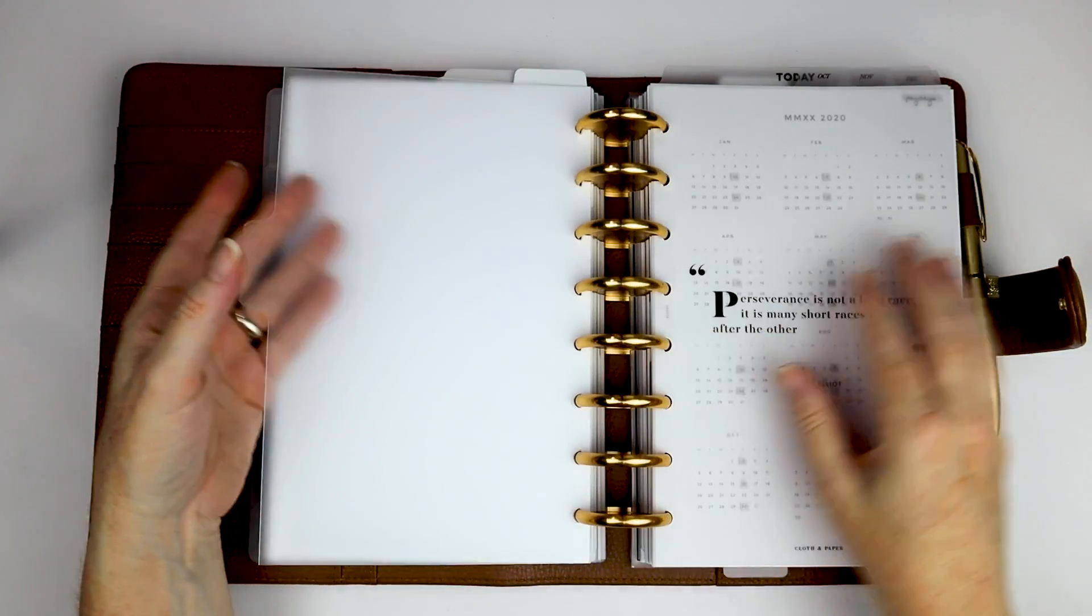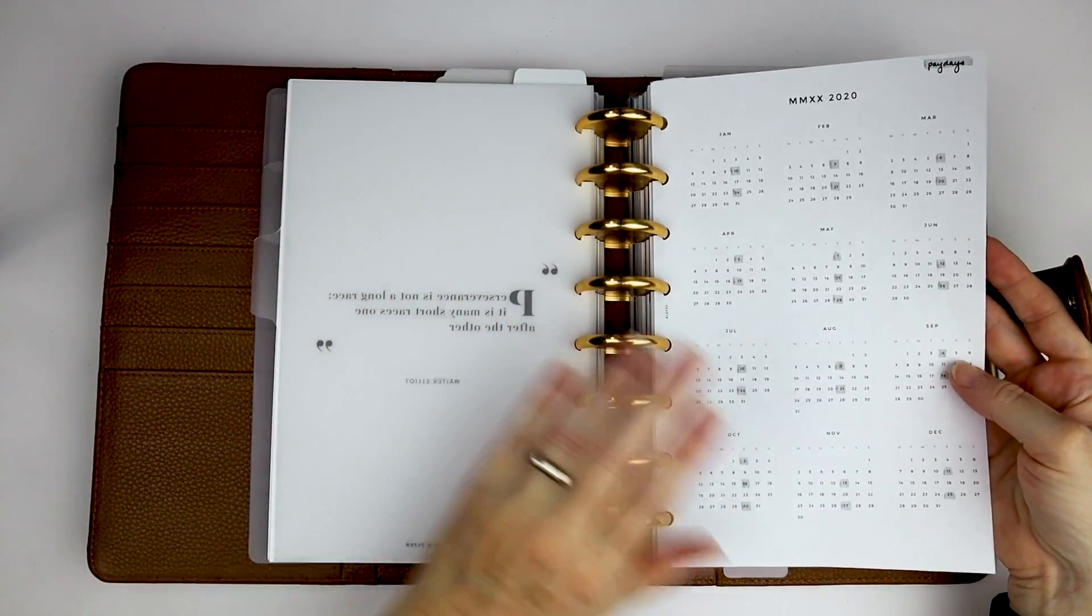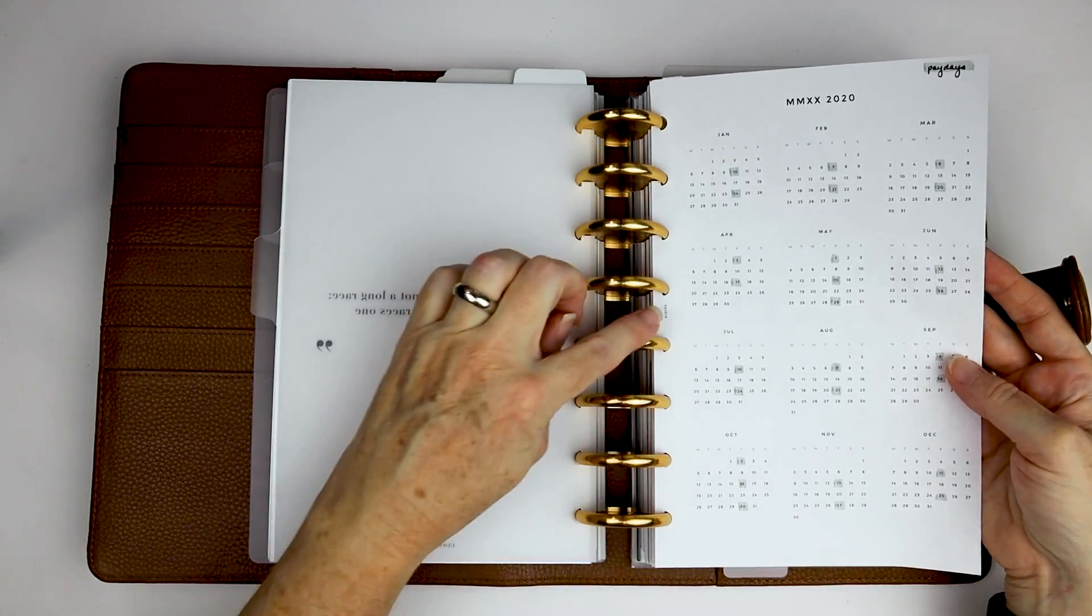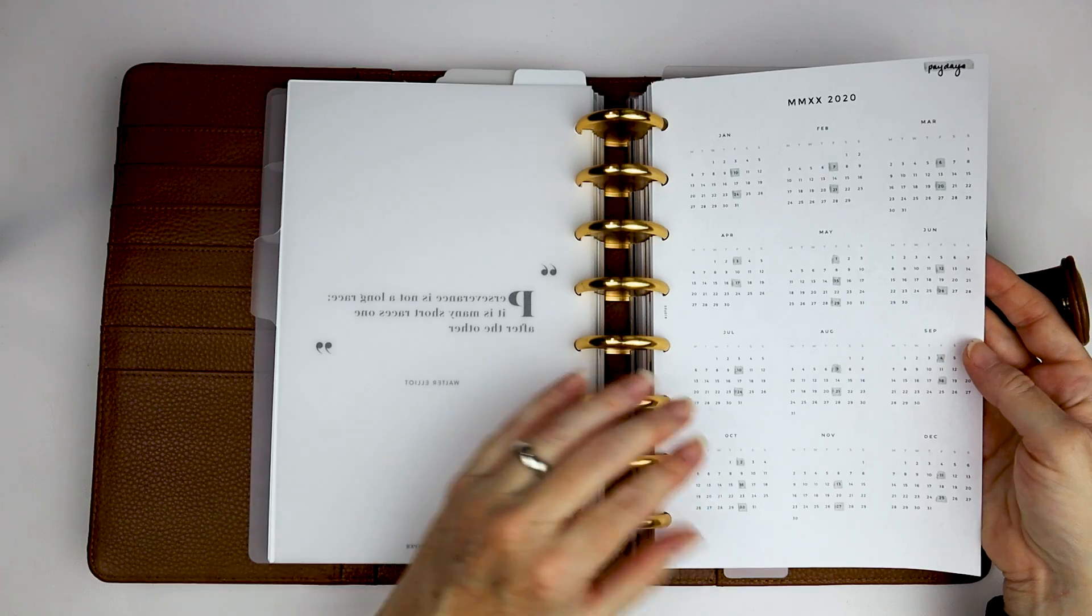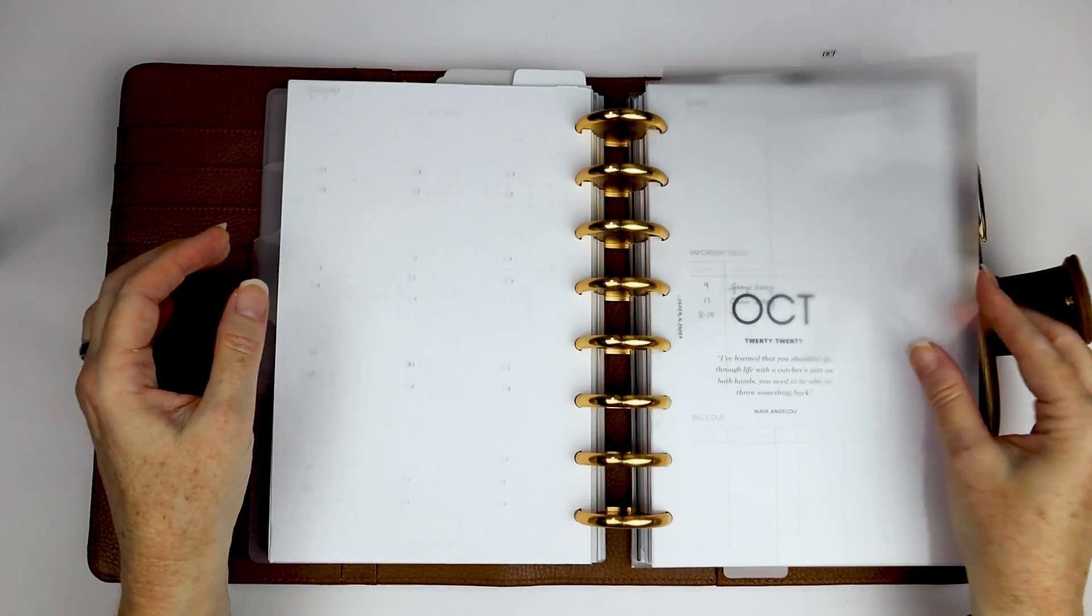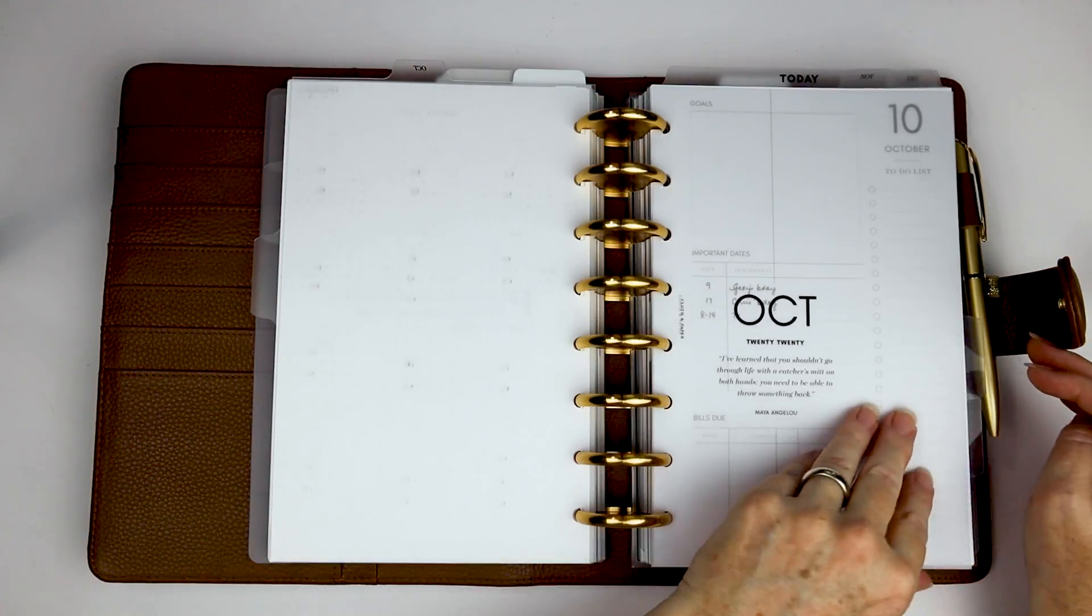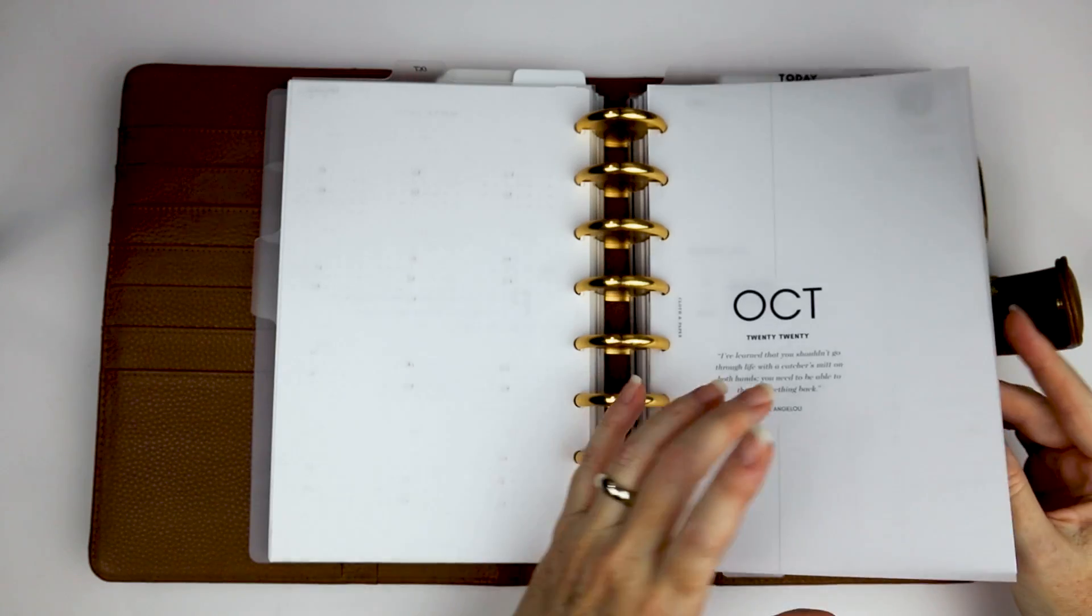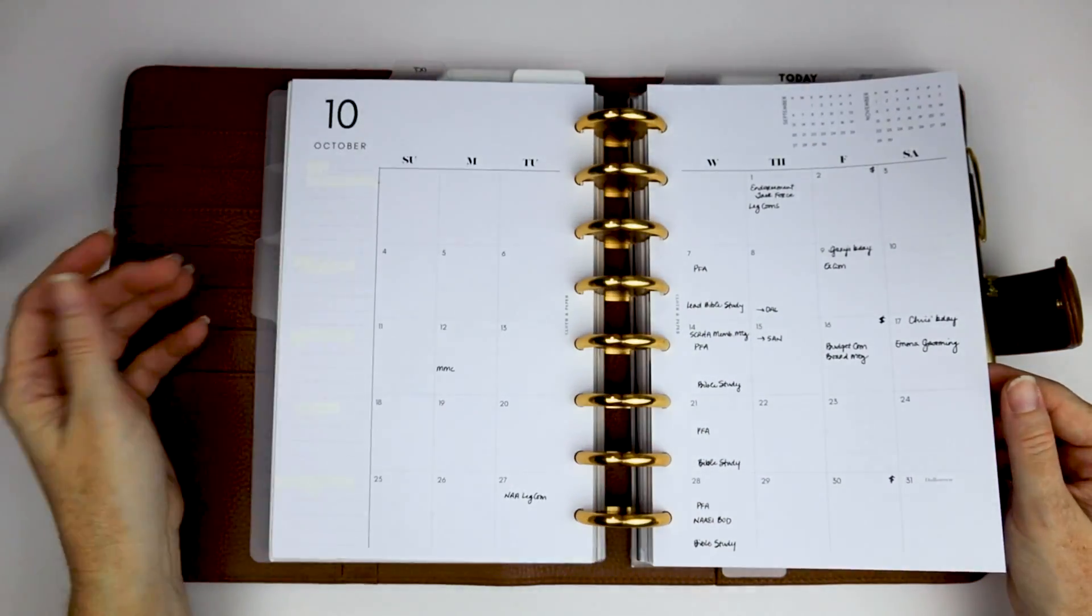And then the next section I have here is my weekly sections. So this is a printable I think from Infinite Lotus. I had this as a part of something else I purchased earlier in the year and I went ahead and grabbed it just so I could quickly highlight paydays. Since that's part of my job is doing payroll, that's usually important information to know. These inserts are from cloth and paper. I have gotten these in the sub box and I went ahead and ordered them for next year because I am enjoying kind of how they're working.